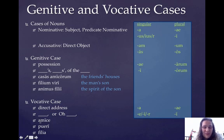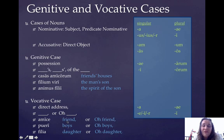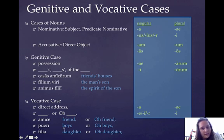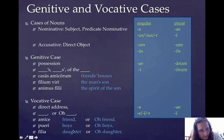We have some examples here: amice, pueri, and filia. Of course, we're directly addressing all three of these. So amice is 'friend' or 'Oh, friend.' Pueri is 'boys' or 'Oh, boys.' And filia is 'daughter' or 'Oh, daughter.'